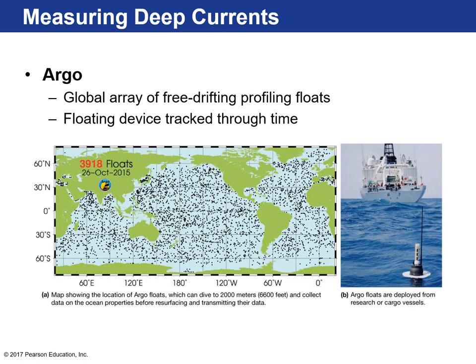Argo is a project with an array of floats all over the ocean that measures ocean temperature, salinity, and pH. Every black dot on this map is one of these devices. As of October 26, 2015, there were about 3,918 floats. They can be on the surface but also dive down to a depth of about 2 kilometers — about 6,600 feet.